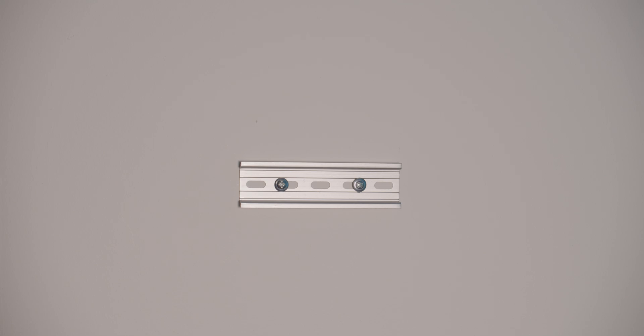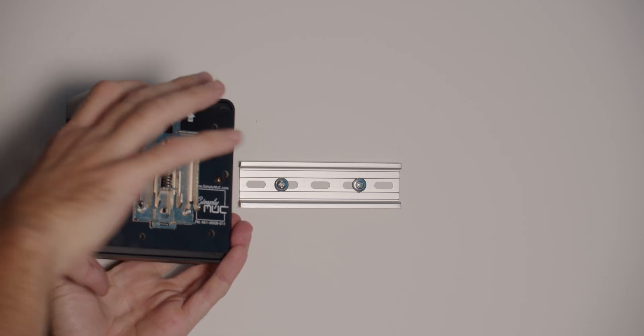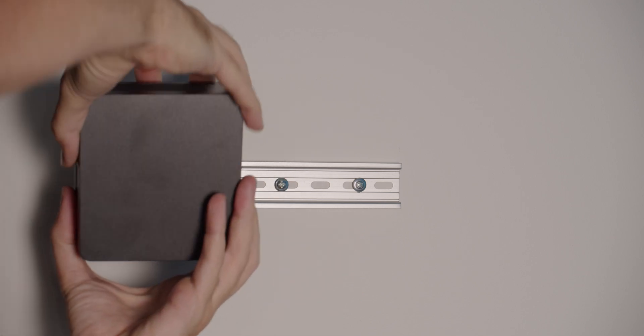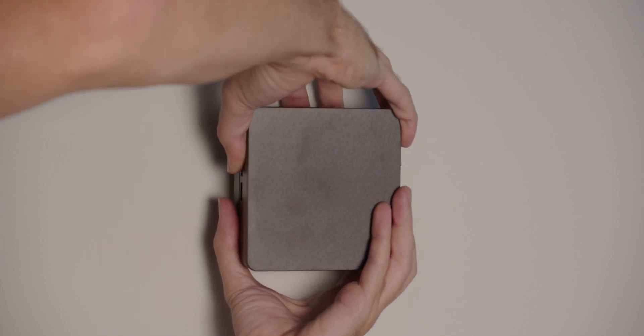So you have your DIN rail, you take your unit with the DIN rail mount, there's a little button here that you'd press like this, push the button, and it should just slide right on.